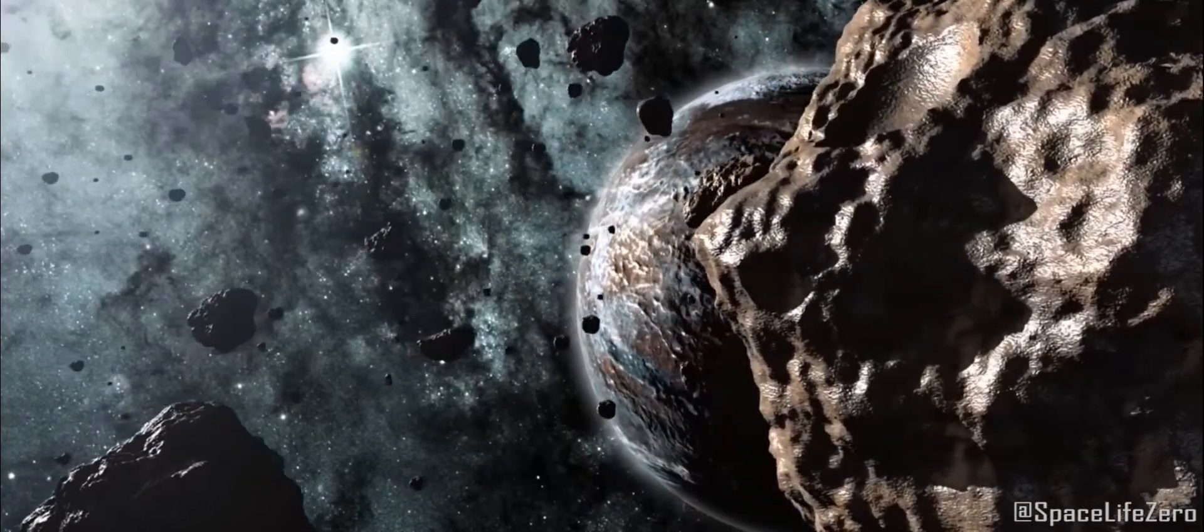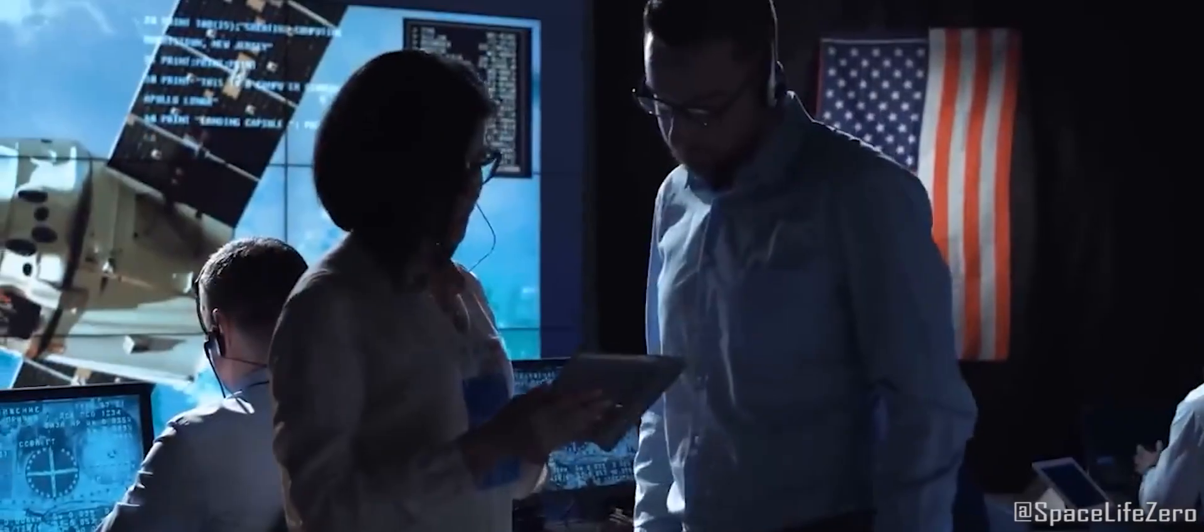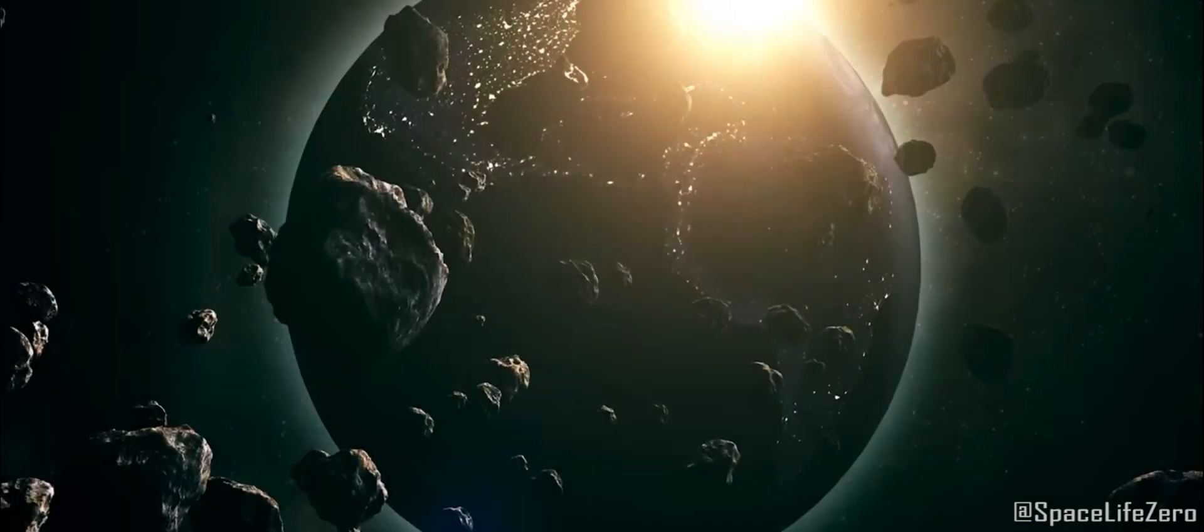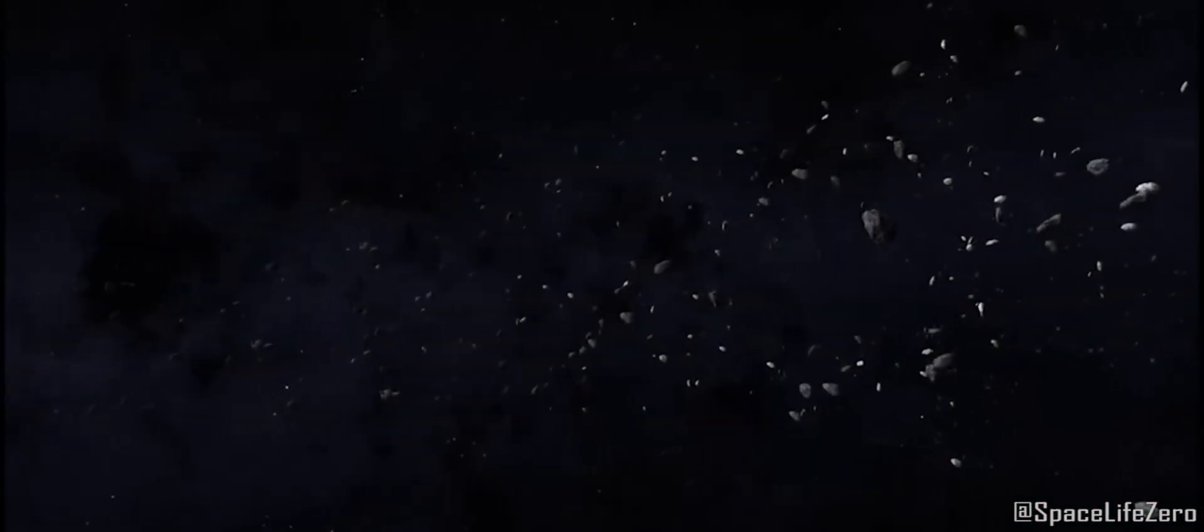Asteroid impacts are a continuously occurring natural process. As per research by NASA, every day about 80 to 100 tons of material falls upon Earth from space in the form of dust and small meteorites.